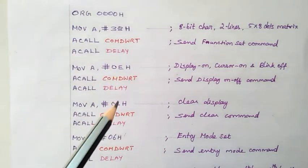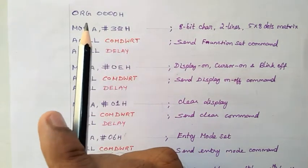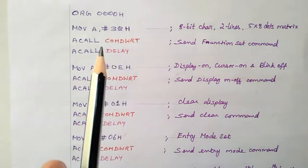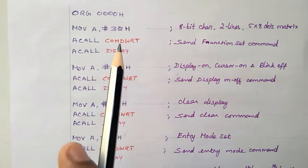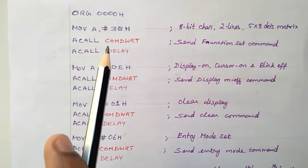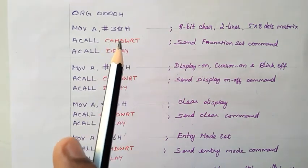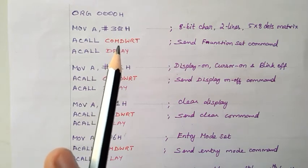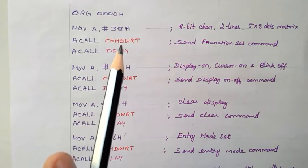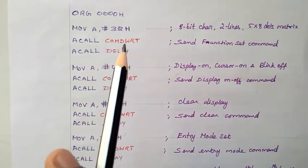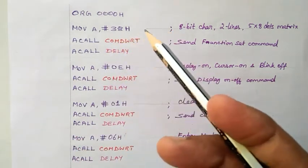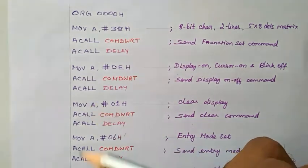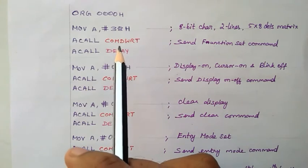For sending these commands to the LCD one by one, we first move the immediate value to the accumulator, then use two types of subroutines — one for writing the command to the LCD, and a delay subroutine before moving the next value. We use a subroutine because for every command, the control signals RS, R/W bar, and enable must be configured the same way. Writing this every time in the main program would make the program very long, so we put it in a subroutine.